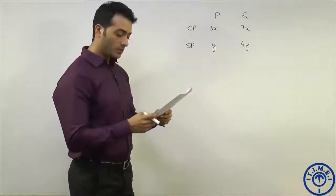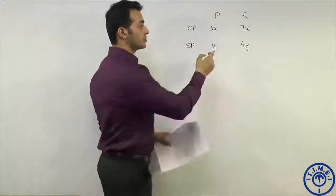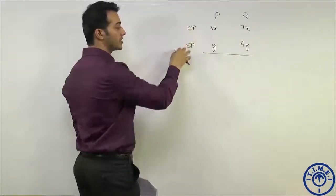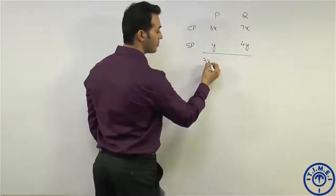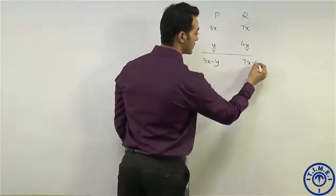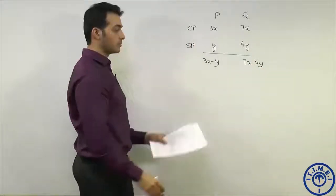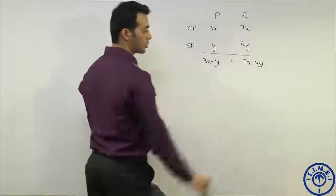The statement mentions that the loss made on both products is the same. Since both products are incurring a loss, and loss is CP minus SP, the loss here is 3x minus y and the loss here is 7x minus 4y. We can equate these to get a ratio of x and y.